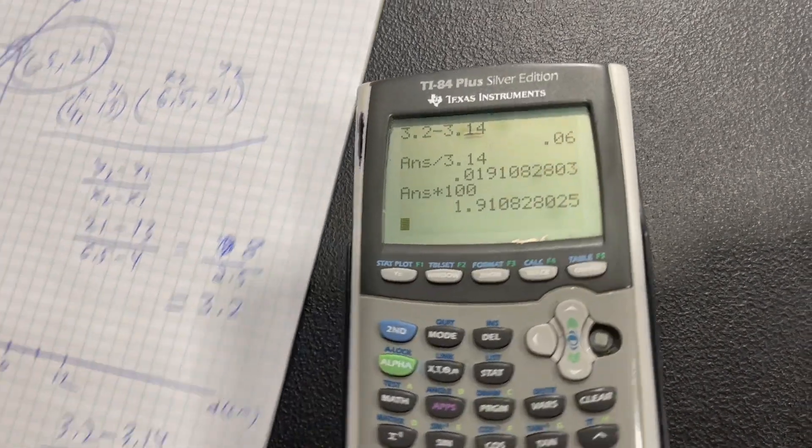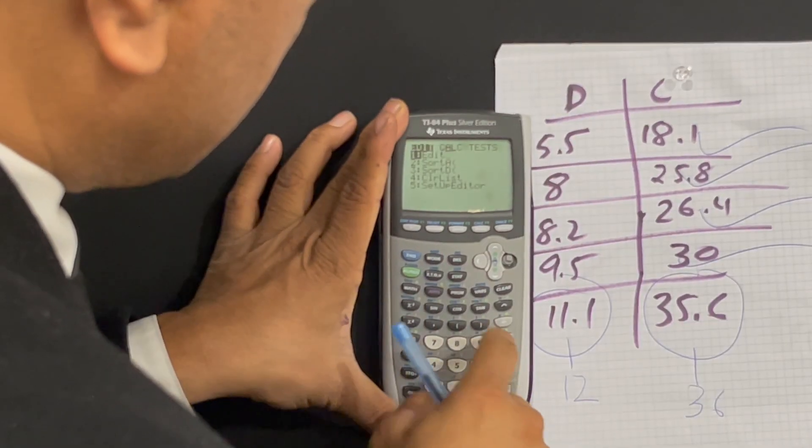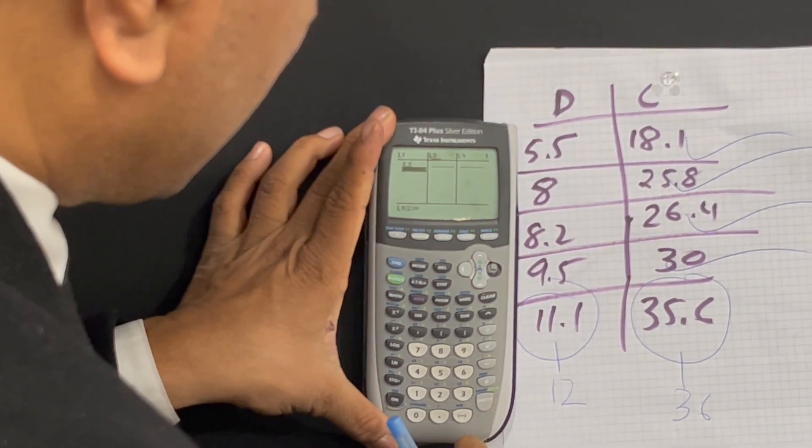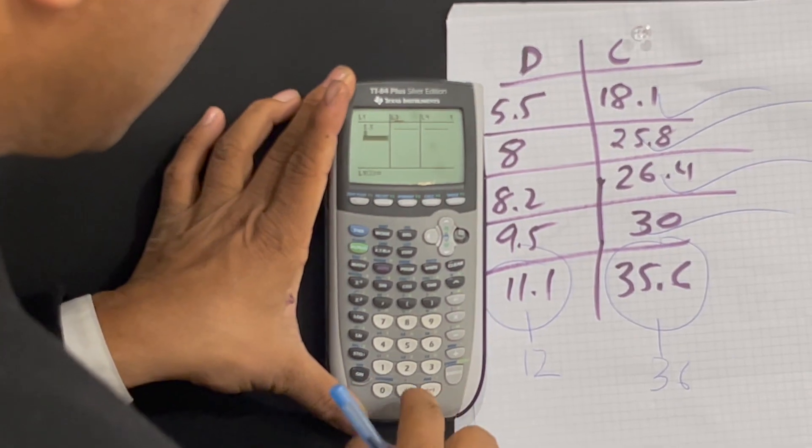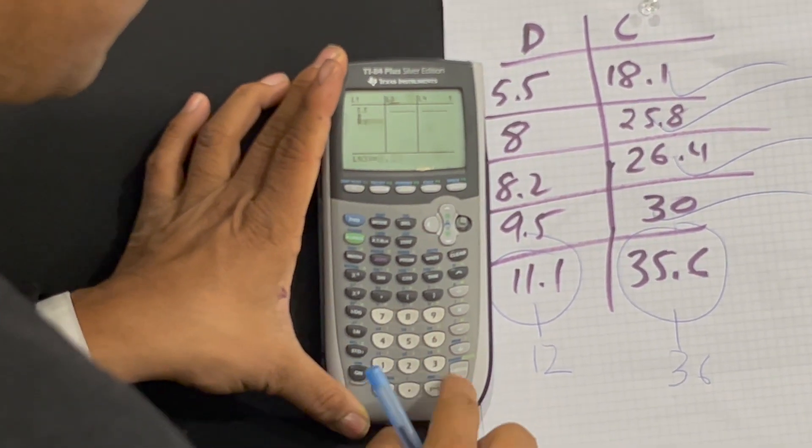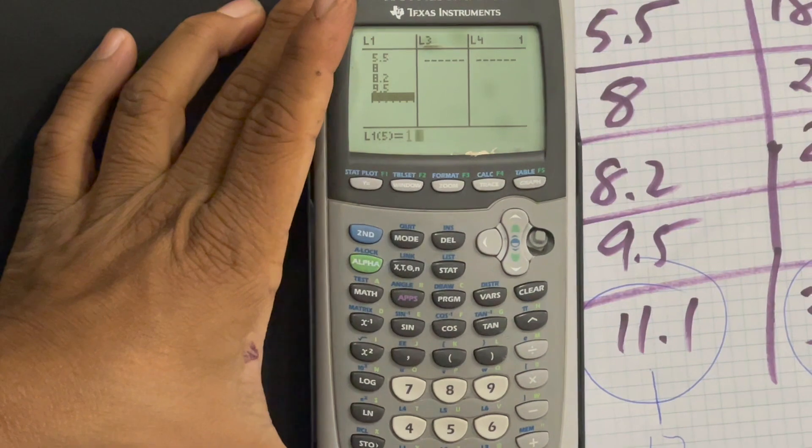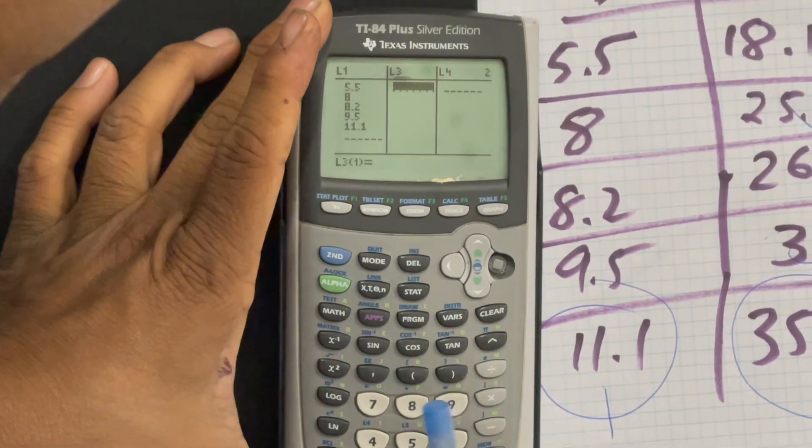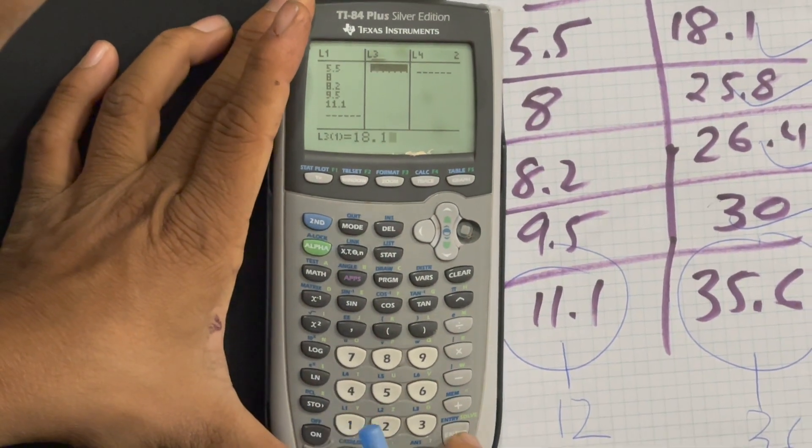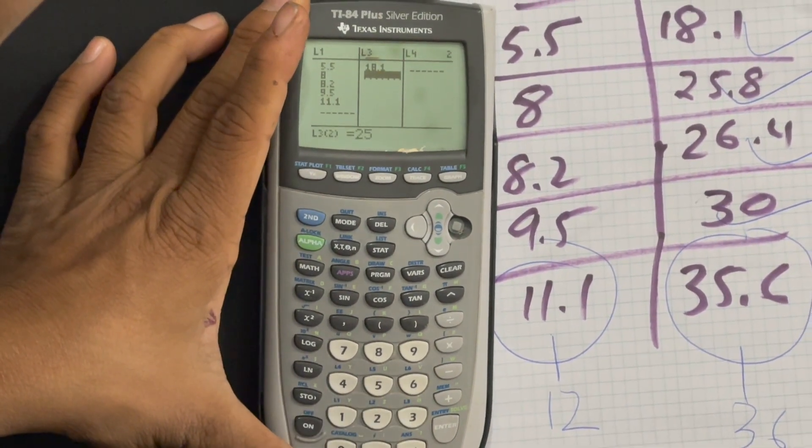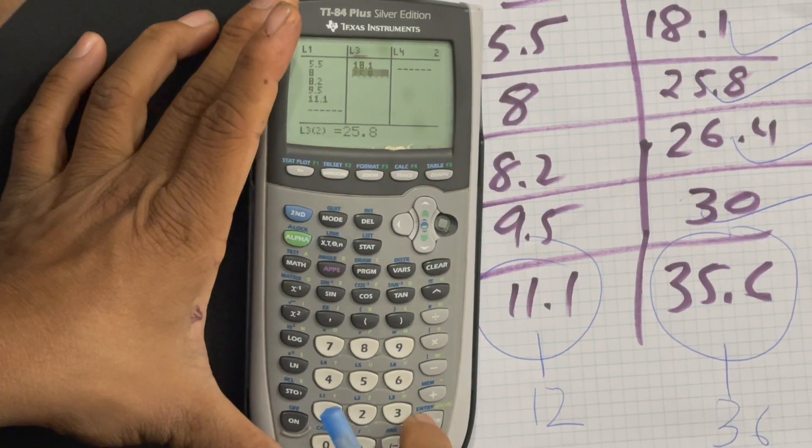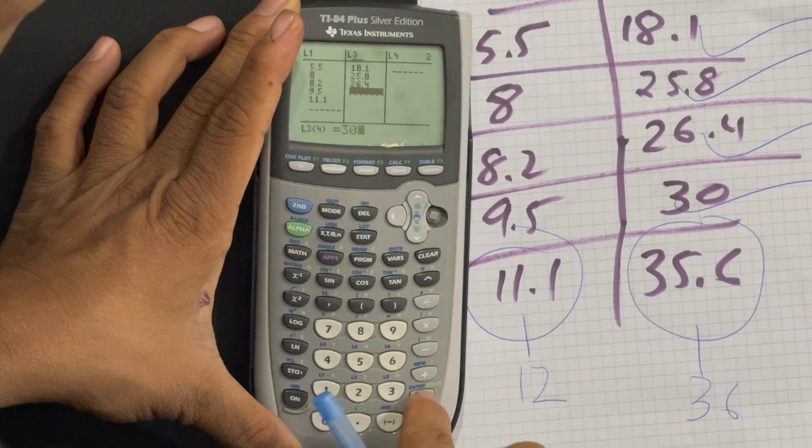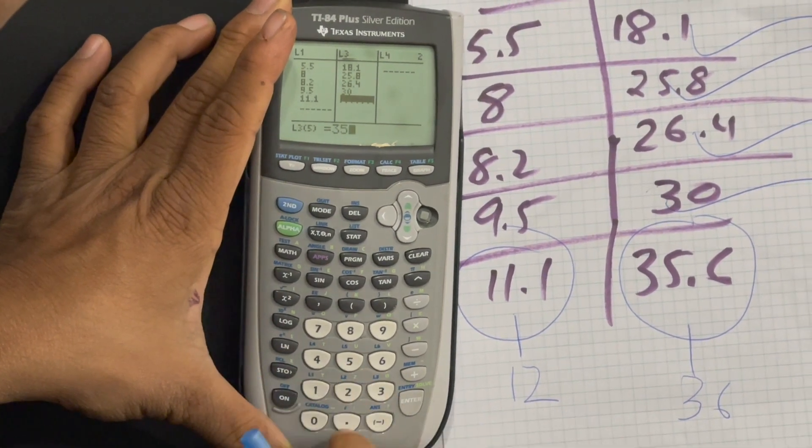So now I'm going to put 5.5. And then 8, 8.2, 9.5, 11.1. All right. Now I have L3: 18.1, 25.8, 26.4, 30, 35.6.